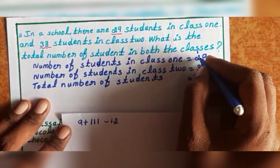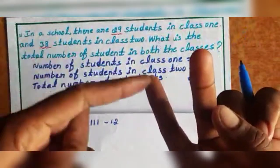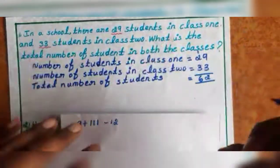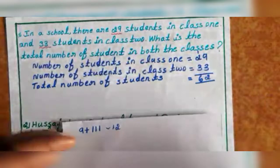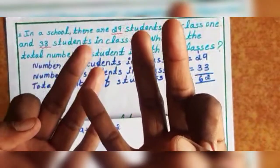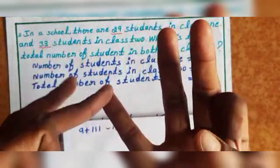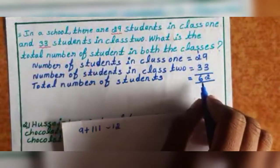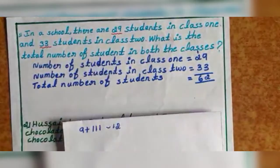1 plus 2 equals 3. Then 3 plus 3 — count now: 1, 2, 3, 4, 5, 6. Total 62 students.